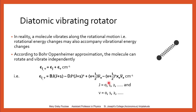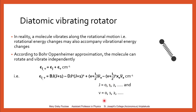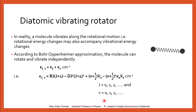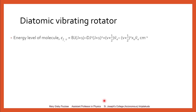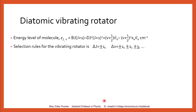Here, the quantum numbers J and v can have integral values ranging from 0 to infinity: 0, 1, 2, 3, etc. The energy level of the molecule is given by this expression eta(j,v), and when the molecule is excited, it should follow certain selection rules given for the quantum numbers.